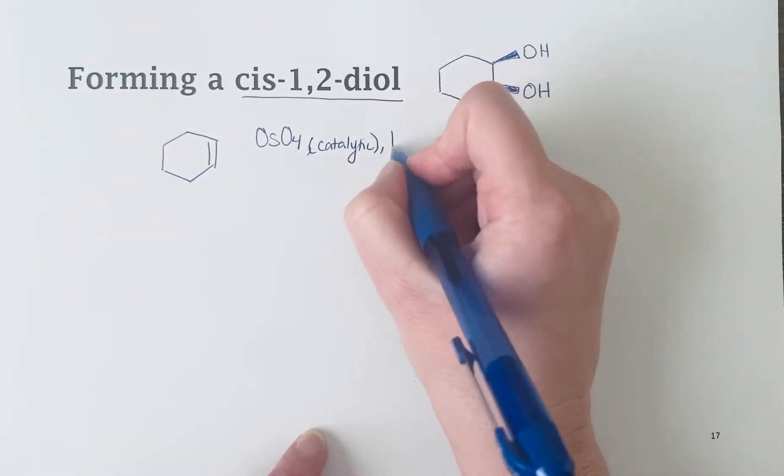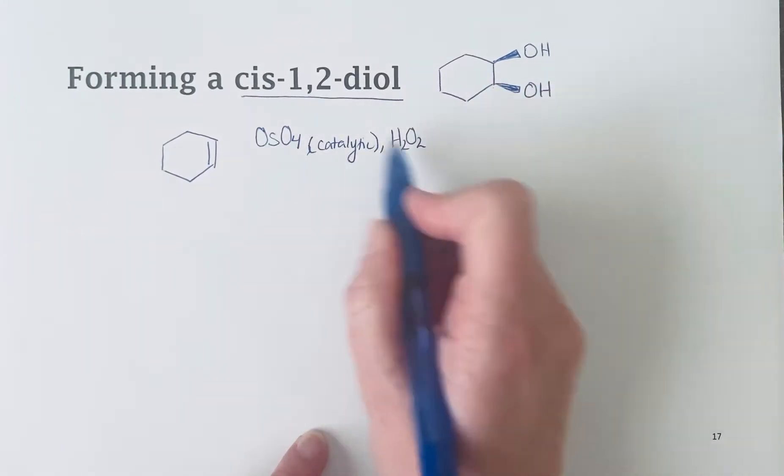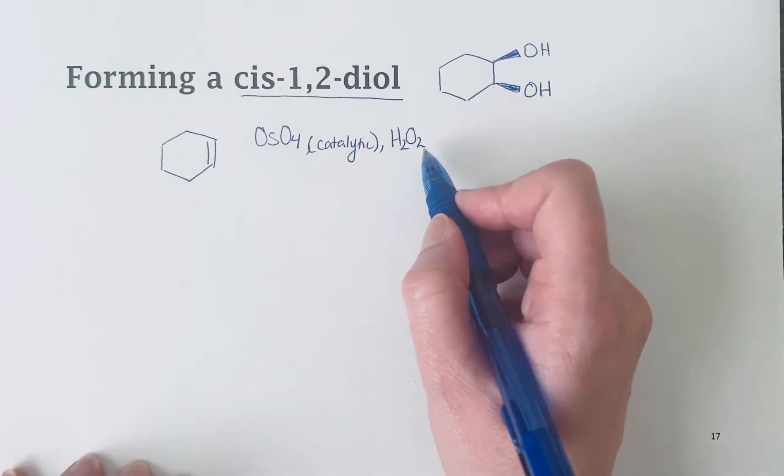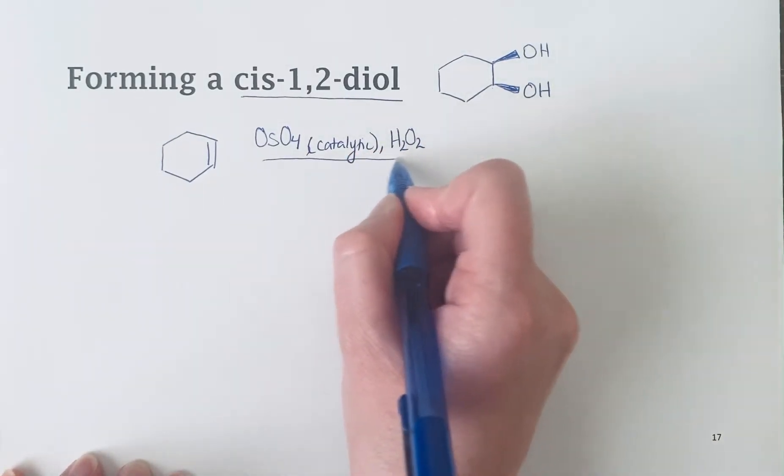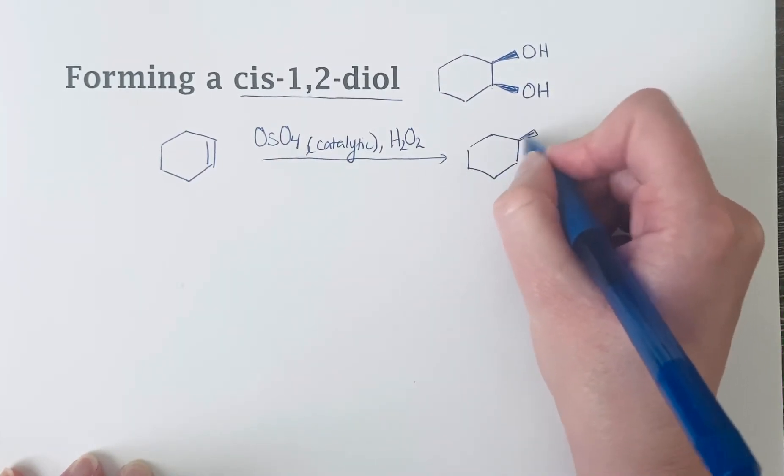Then we add in a co-oxidant, something that can react and oxidize that back again. Something like hydrogen peroxide, other peroxides can work for this as well. Overall, this reaction's product is going to be that cis-diol.